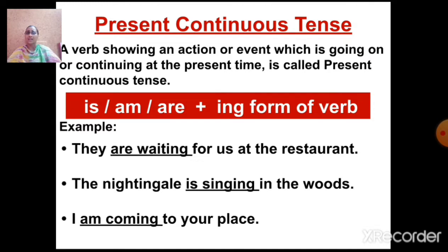'Am', as I said in the earlier session, is very evident — we are always going to use 'am' with 'I', and 'are' we are going to use with plural subject. Now let's see the example: 'They are waiting for us at the restaurant.' Here the subject is 'they', that is plural. So we write 'are' plus ING form of verb, that is 'waiting'.